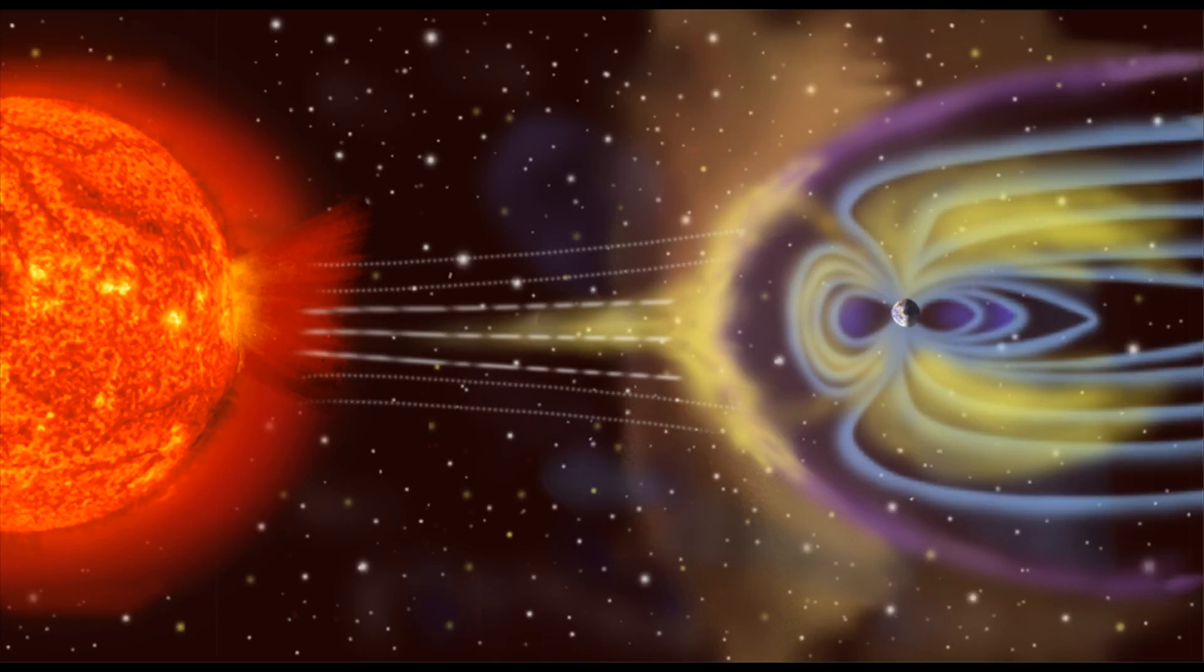Once cosmic rays hit Earth's atmosphere, they can produce showers of secondary particles such as photons, electrons and more massive versions of electrons called muons which can make it all the way down to the planet's surface.